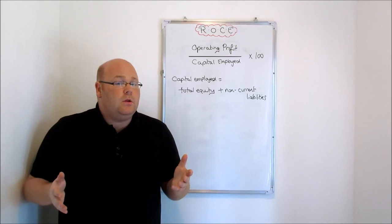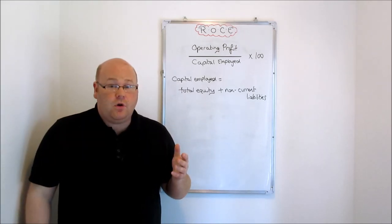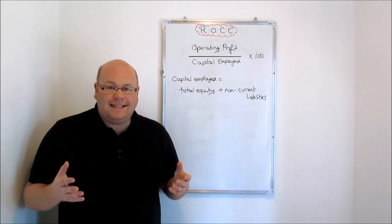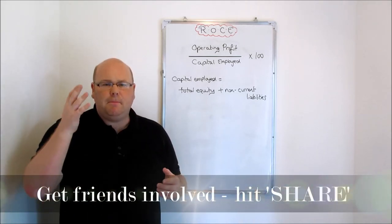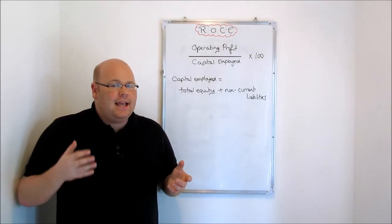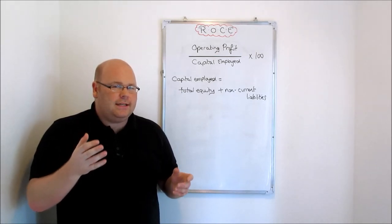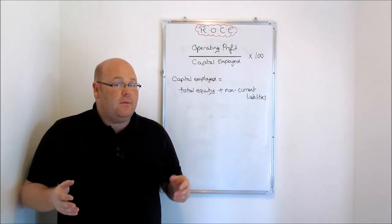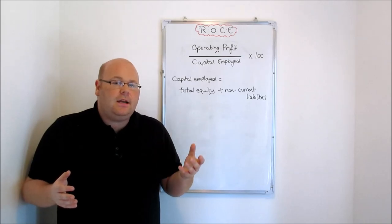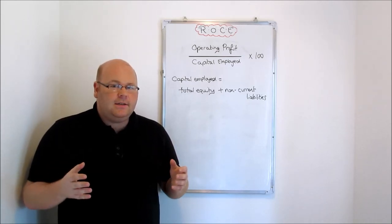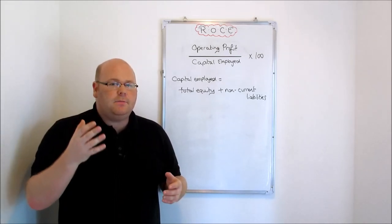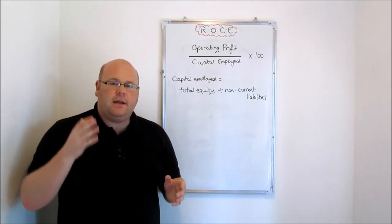If you do get access to financial information in your case studies or exams, that's one thing to look out for. The other thing to spot is whether the organization is leasing a lot of its assets. If the organization is leasing rather than buying expensive assets like property, the capital employed figure won't be as great as for a firm that owns those assets outright. A firm may have a slightly higher ROCE than rivals simply because it relies heavily on leasing long-term fixed assets rather than purchasing them.